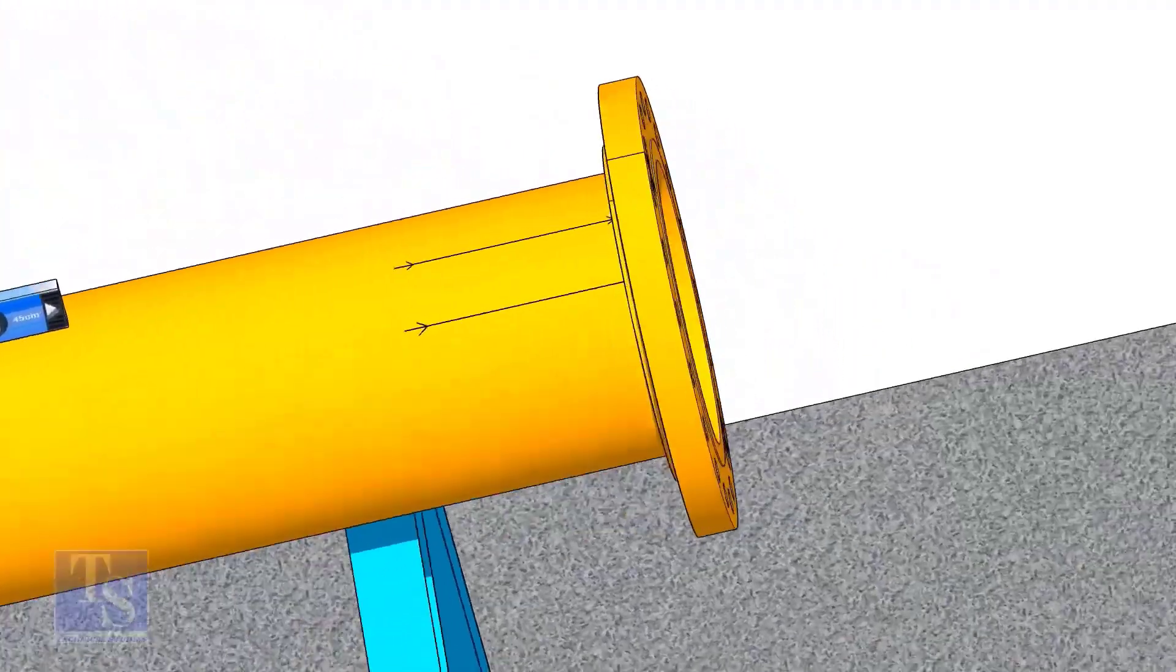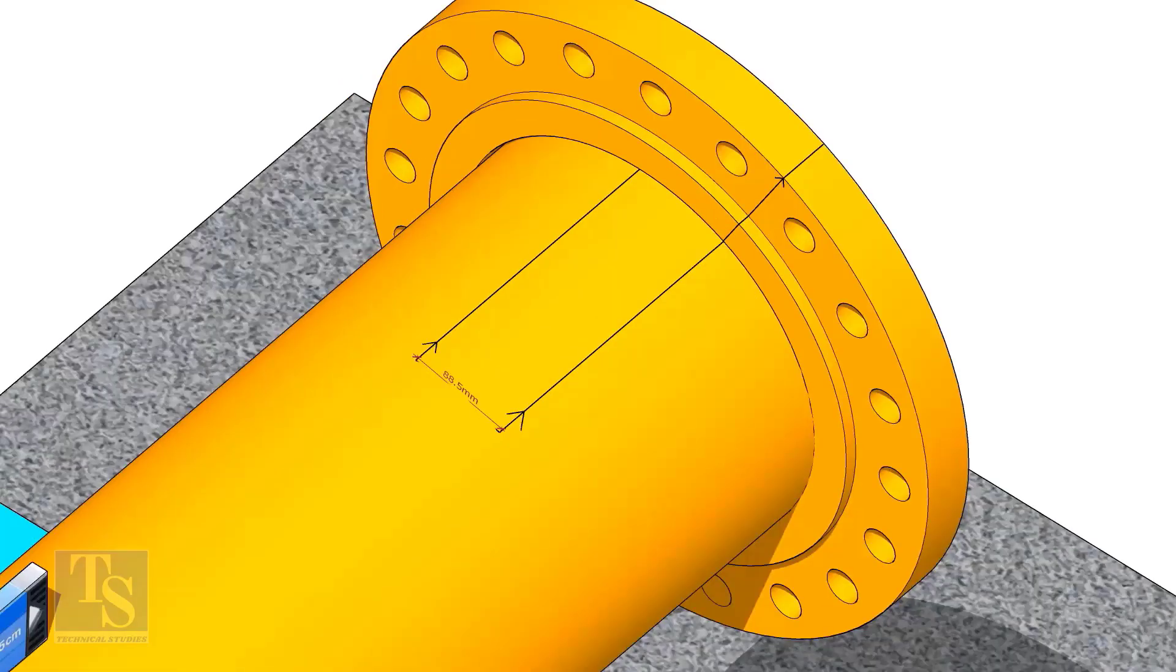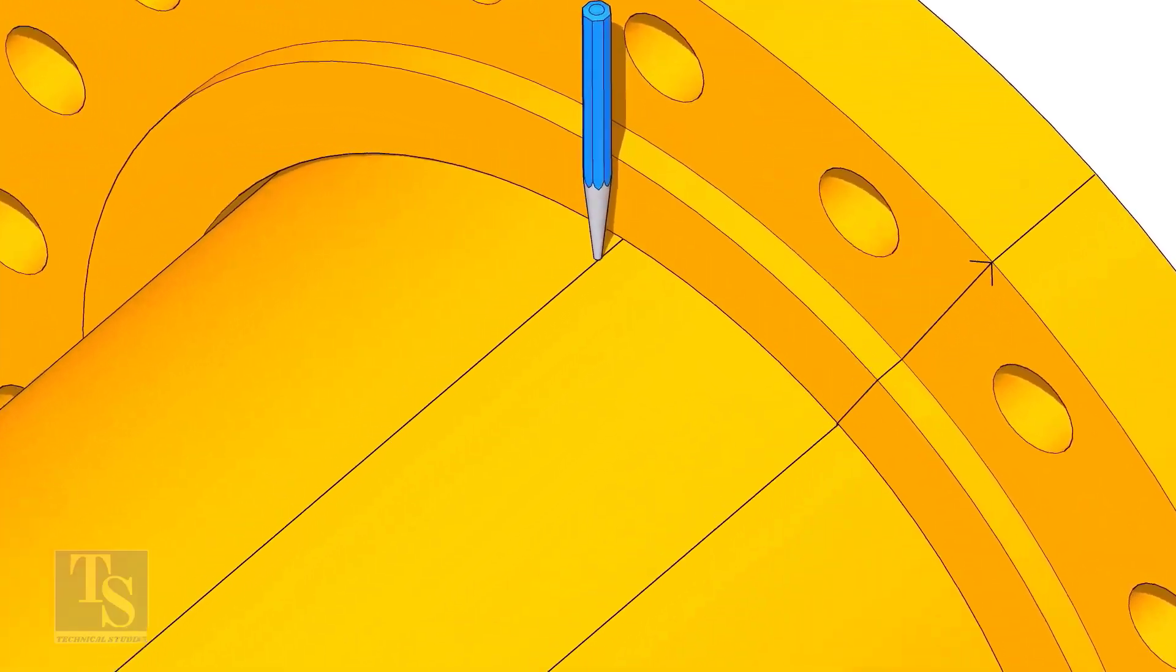Put the flange on the pipe. Rotate the flange until the center line on the flange and the 25 degree line on the pipe come in line. Don't forget to punch mark the center lines.